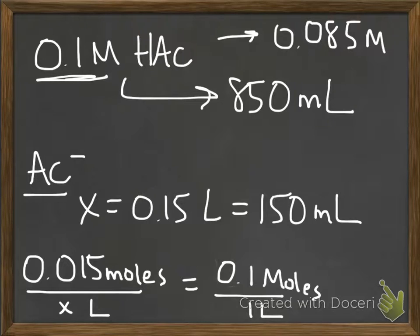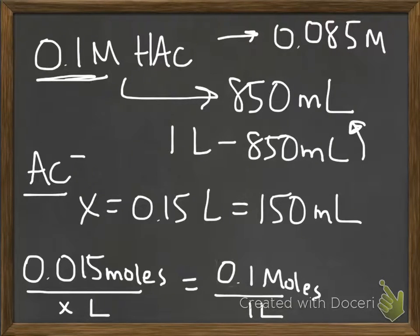Now, you could have actually just said 1 liter minus 850 mils, because you figured out 850 mils of one species, and the rest is going to be the other species. But it's nice to do this math and really confirm it.